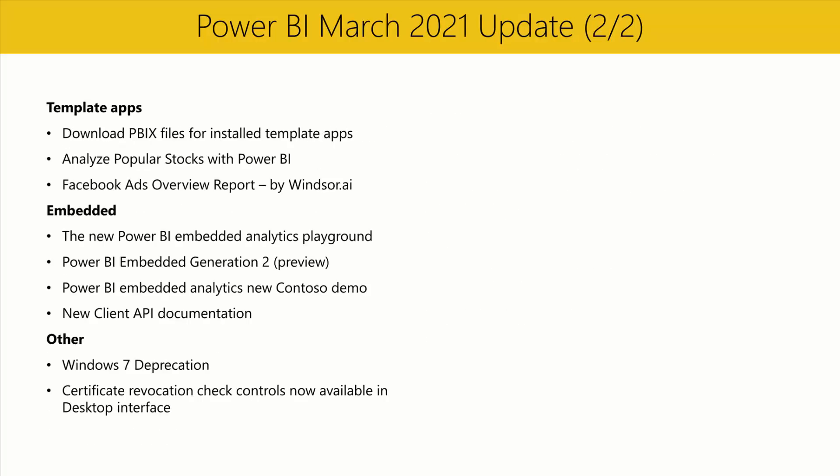We have two new template apps in the Template App section. Template apps allow you to save time by connecting your own data to a pre-built report that you can personalize and share. We're also excited to announce that Template App Publishers can now allow Power BI Pro users to download a PBIX file directly from your template app once they've installed it. All you have to do is turn on the Download PBIX feature in the Control tab when creating your template app. With this change, template apps are now a one-stop shop for distributing Power BI datasets, reports, and dashboards outside your organization.